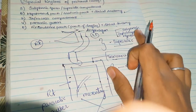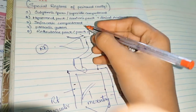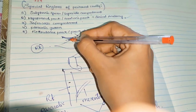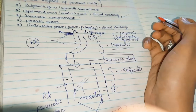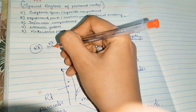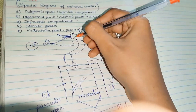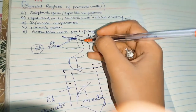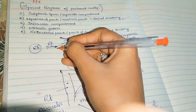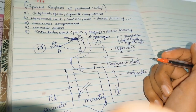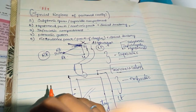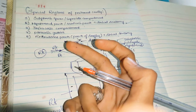Let us start one by one with subphrenic and subhepatic spaces. According to the name, this is the diaphragm. Below it is the subphrenic space — this space right upon the liver is called the subphrenic space. It is divided into right subphrenic space and left subphrenic space. Below the liver you have the left subhepatic and right subhepatic space. The supracolic region is mainly divided into two parts: intraperitoneal and extraperitoneal.